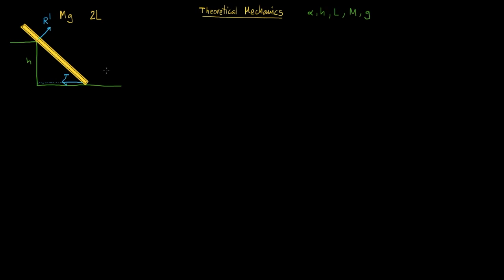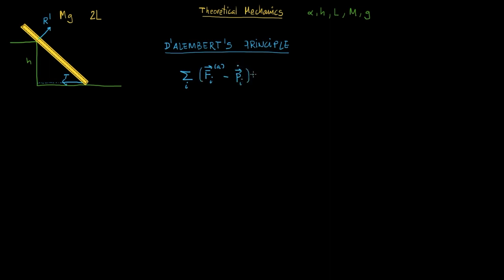So it can be done by Newton's law, but let's start with D'Alembert's principle, which is the new method from the first lesson. D'Alembert's principle says that the sum of the dot products of the applied forces minus the rate of change of linear momentum, dot with the virtual displacements, is equal to zero. This is a static problem, so P-dot equals zero because there is no motion here, so we can delete the P-dot term.